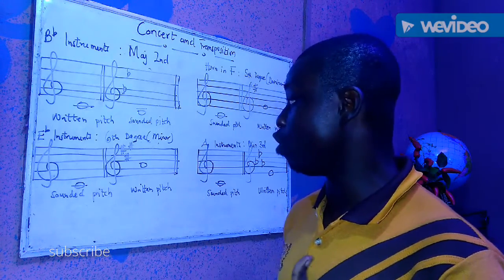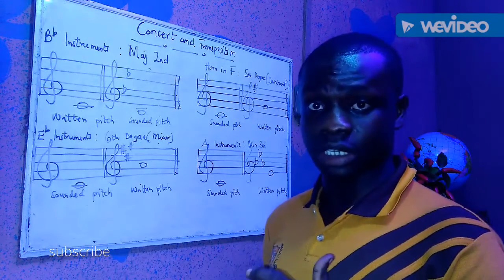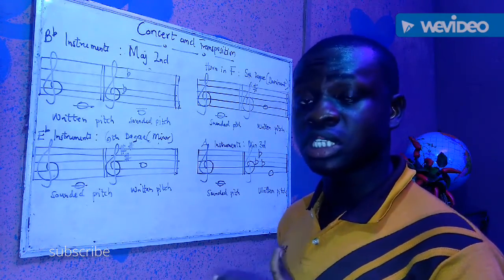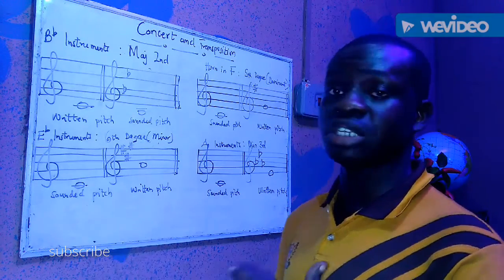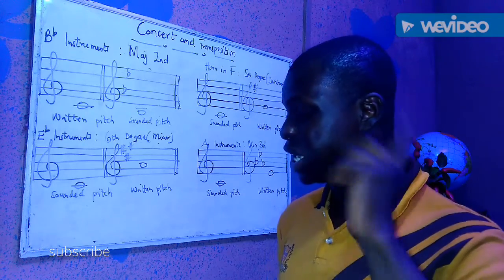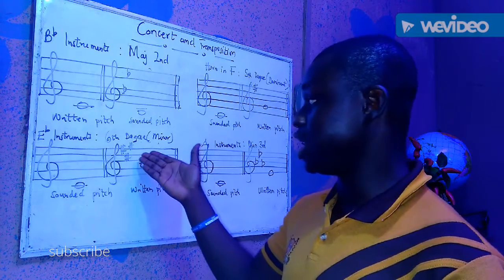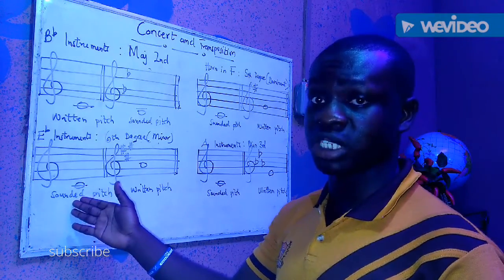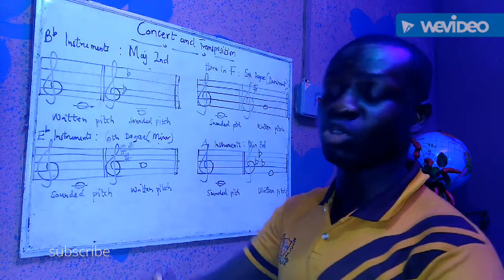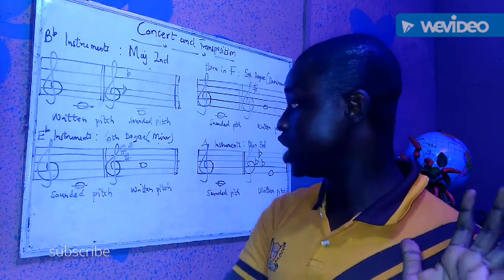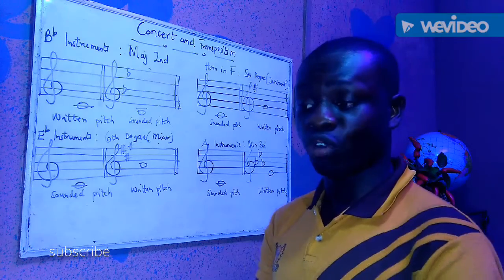Any concert key you give for E-flat instruments, they have to play from the sixth degree, which is going to be in minor form. So in C concert, they are going to play from A — the sixth degree of C. C is the sounded pitch for the E-flat saxophone, but on the written sheet you will see A. Any note you give an E-flat instrument will be written on the sixth degree from the concert key.